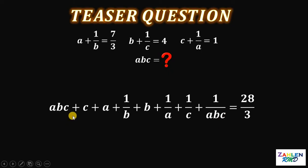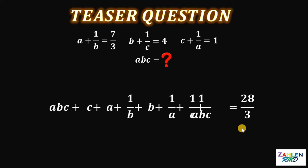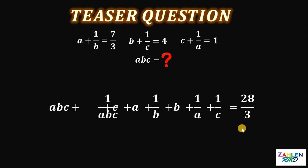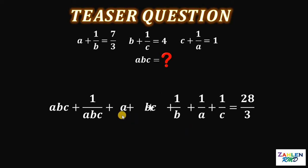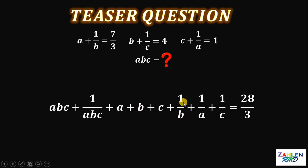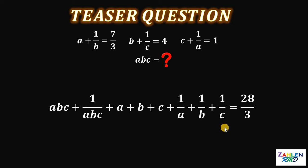Notice that we have ABC and 1 over ABC, so let's put them together. Next, let's rearrange C, A, and B to get A plus B plus C and 1 over A plus 1 over B plus 1 over C.